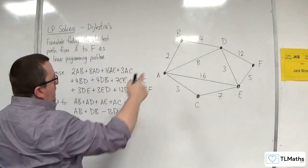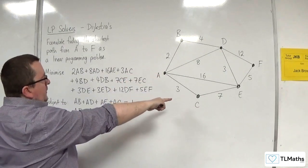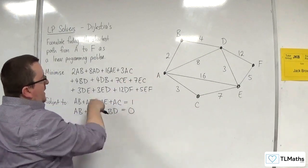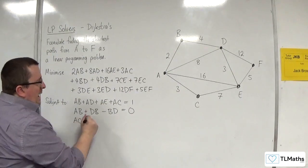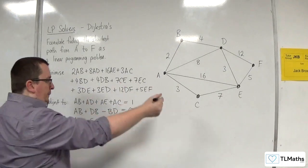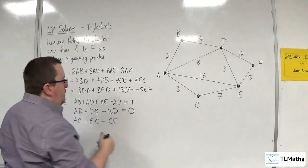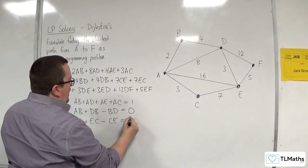So for D, well actually let's go for C next. Let's go in alphabetical order. We've done A, we've done B, let's go to C. So we've got AC going in and we've got EC going in, take away the routes going out, CE. I'm not including CA because that returns me to the start vertex. And that's going to be equal to zero.